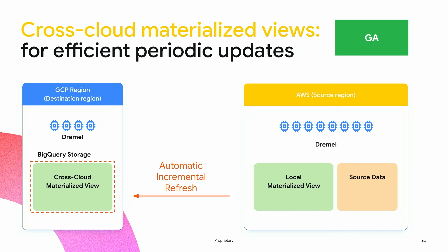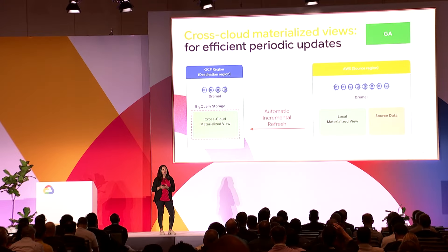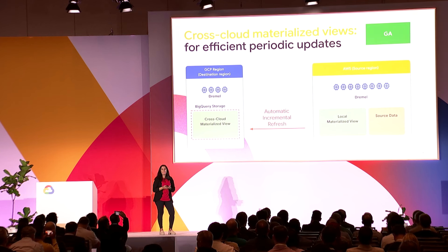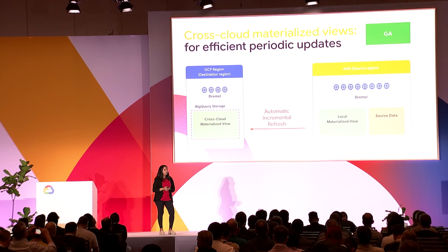Cross Cloud Joins are great for ad hoc analysis, but what if you want periodic reporting and dashboarding with data that's changing consistently in another cloud? We've GA-ed a new capability called Cross Cloud Materialized Views. This allows you to create a local materialized view on AWS of the data you need available on GCP periodically. Through a replica materialized view on GCP, data is automatically and incrementally brought over at the refresh interval you've set — essentially replacing data pipelines. All the data engineering overhead for setting up pipelines is eliminated, as these Cross Cloud MVs are both automatic and incremental.